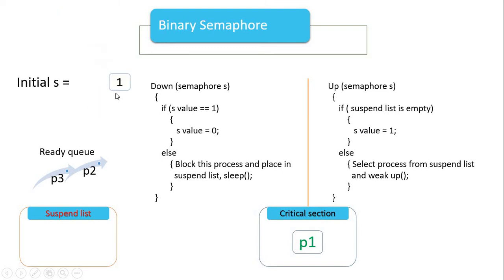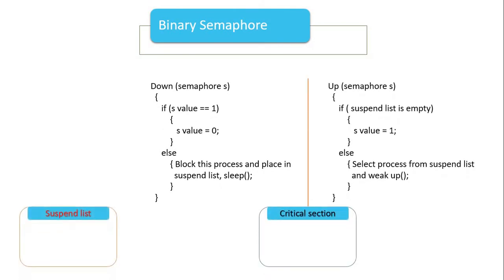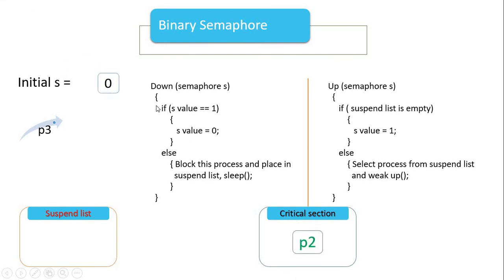We can specify that when Process 1 finishes its work, we have the initial value back to 1. We are ready to do the process for P2 or P3. We are going to do the process — and with this, the critical section will execute. This solution means the critical section error is resolved.